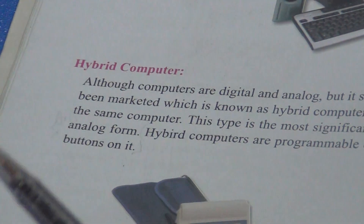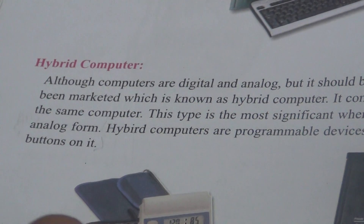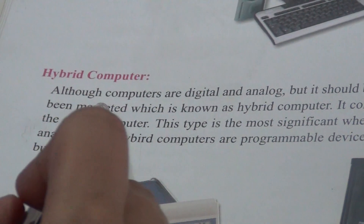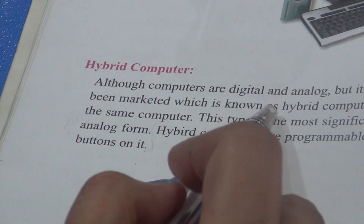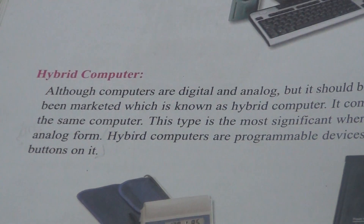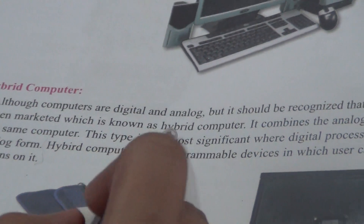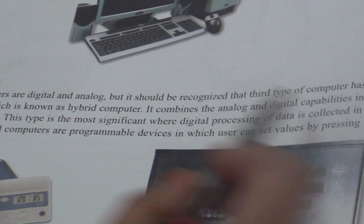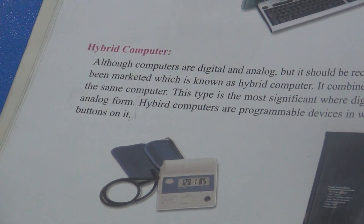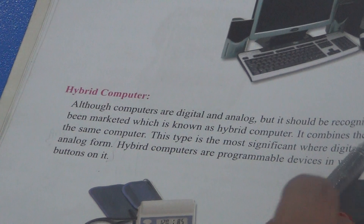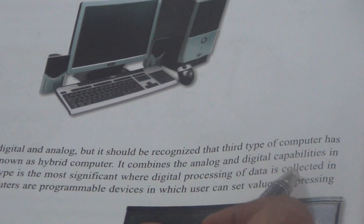Hybrid computer — simply we can say it is the combination of Analog and Digital computer. Because it accepts data in Analog form and gives answers in Digital form. Although computers are digital and analog, a third type of computer has been marketed which is known as the Hybrid computer. It combines the Analog and Digital capabilities in the same computer. This type is the most significant where digital processing of data is collected in Analog form.